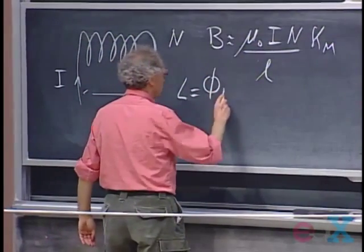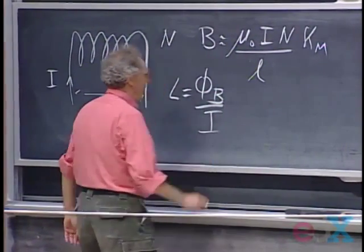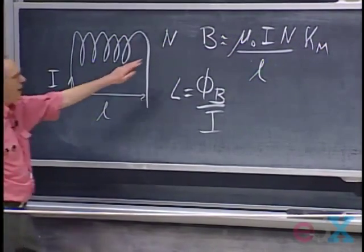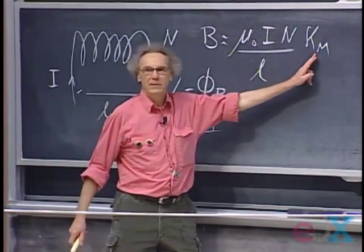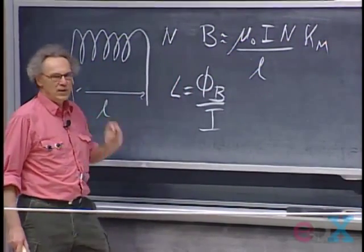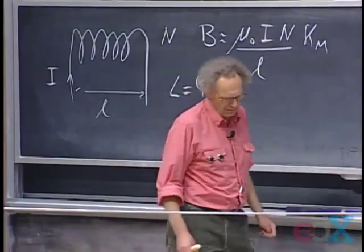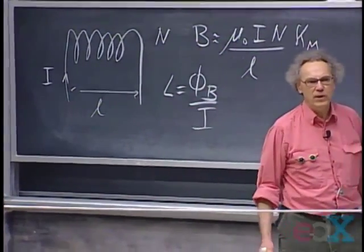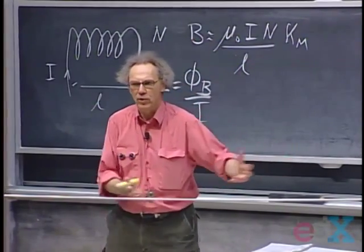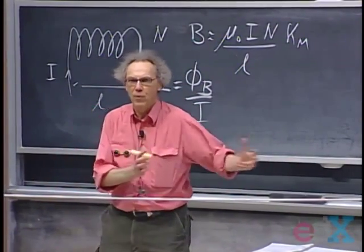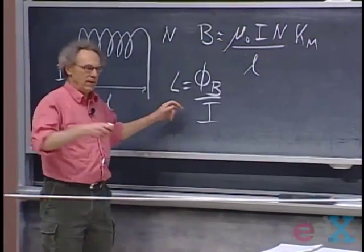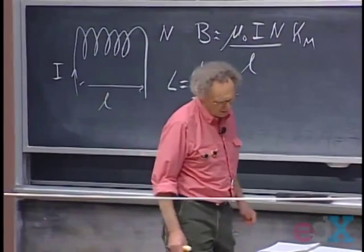Self-inductance is defined as magnetic flux divided by the current I. If the magnetic field goes up by a factor of kappa_M, then the magnetic flux will go up by the same factor, and so the self-inductance will go up. You may remember a demonstration where I had an iron core which I moved inside the solenoid — depending on how far I moved it in, we could see that the self-inductance went up, and when I pulled it out, self-inductance went down again.